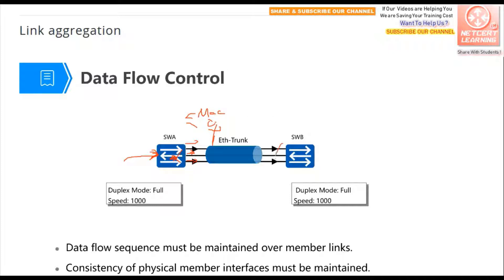When configuring link aggregation, you must ensure all links in one link aggregation group have the same duplex mode and the same speed. That means a gigabit Ethernet interface and a fast Ethernet interface cannot be bound into one link aggregation group.